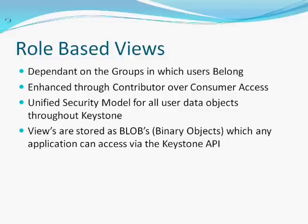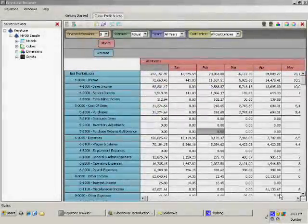On a technical note, views that are stored within a Keystone server are stored as blobs, which means they're binary objects which any application can access via the Keystone API.